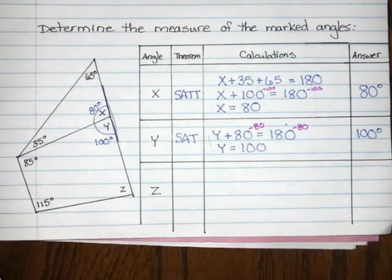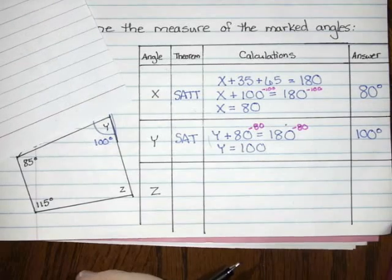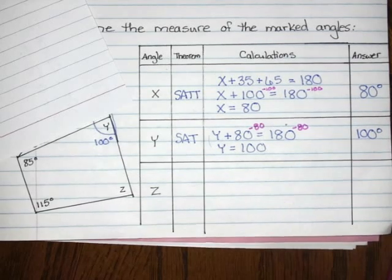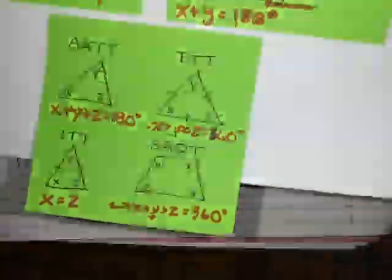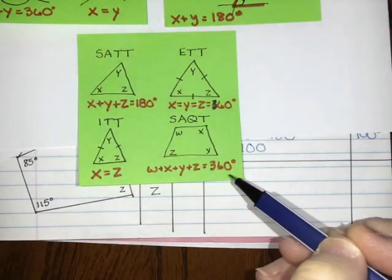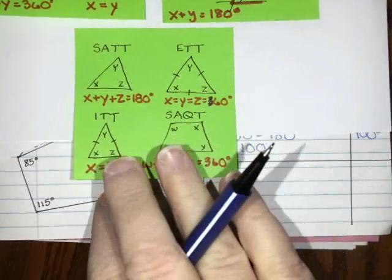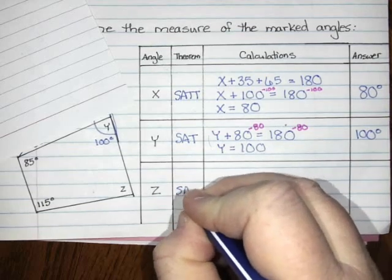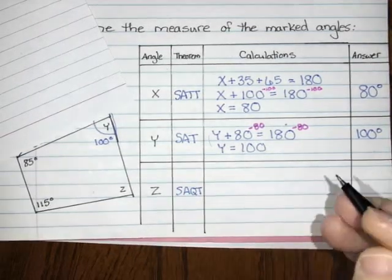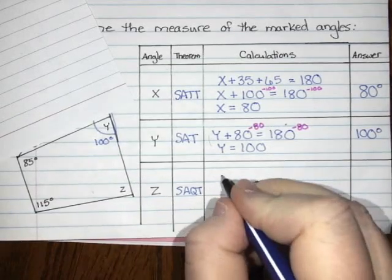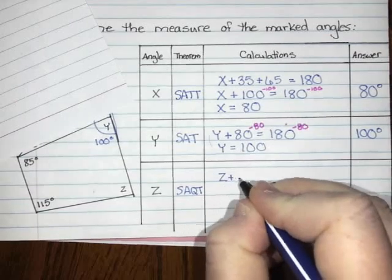Our last part is to find z. I'll cover up the top part again and focus on the quadrilateral. Now I know three of the four angles, which is good. We use the sum of the angles in a quadrilateral theorem — SAQT — which says the four angles add to 360 degrees. So: z plus 115 plus 85 plus 100 equals 360 degrees.